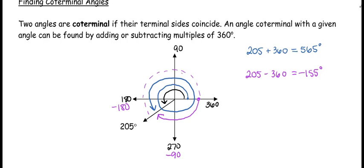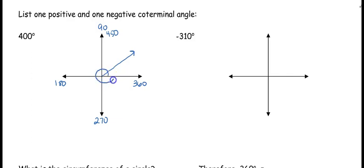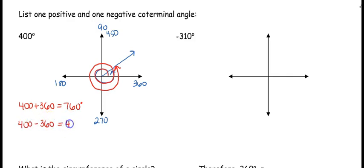Let's flip to the back and list one positive and one negative coterminal angle, starting with 400 degrees. We've got 90, 180, 270, 360 — and 400 goes a little more, so adding another 90 gives 450. We see 400 degrees is 40 degrees past 360. Drawn in standard form, we go all the way around and come back here. For a positive coterminal, take 400 and add 360, giving 760. If I subtract 360 from 400, that puts me at 40 degrees — which is another positive coterminal angle.